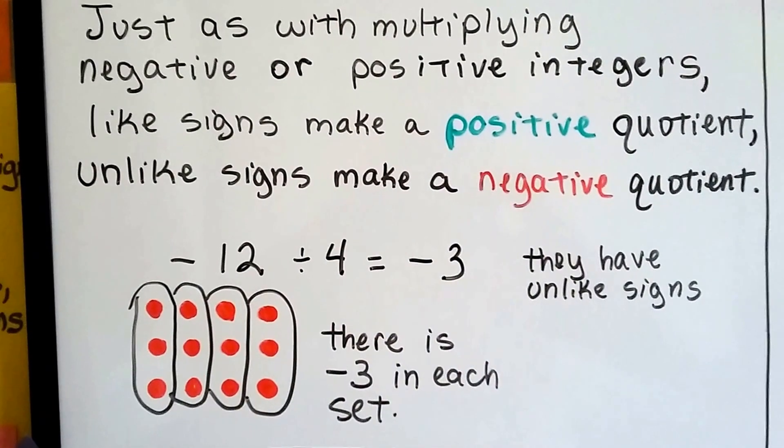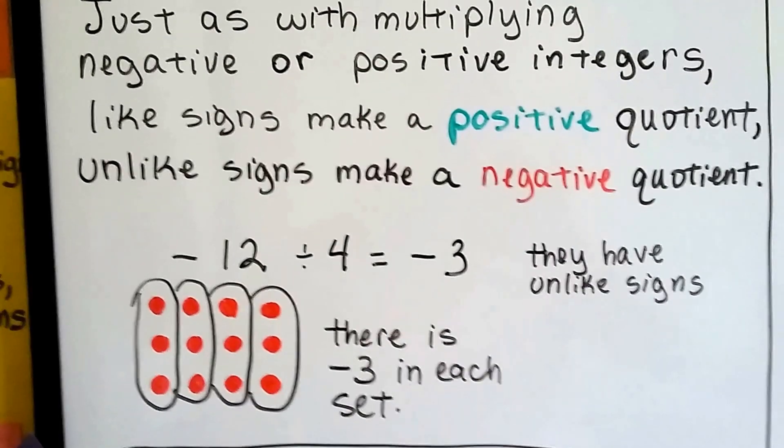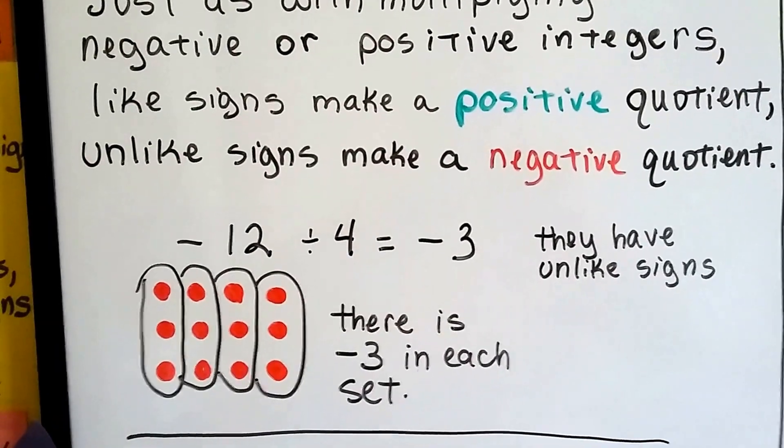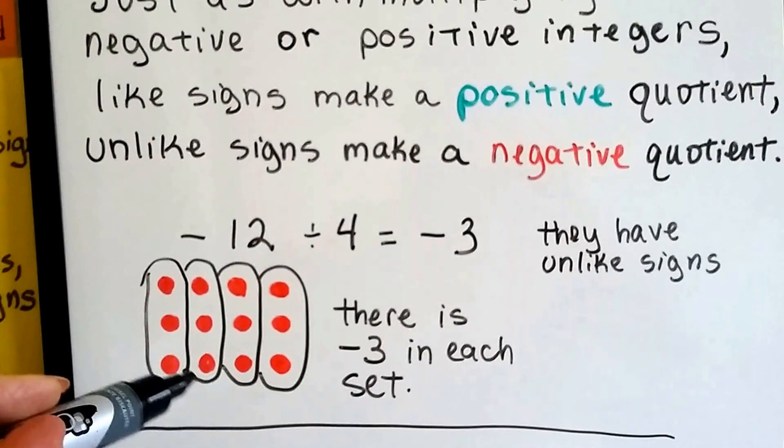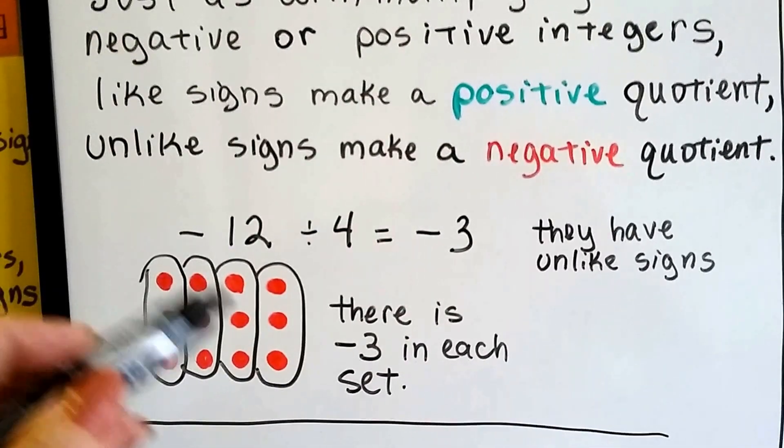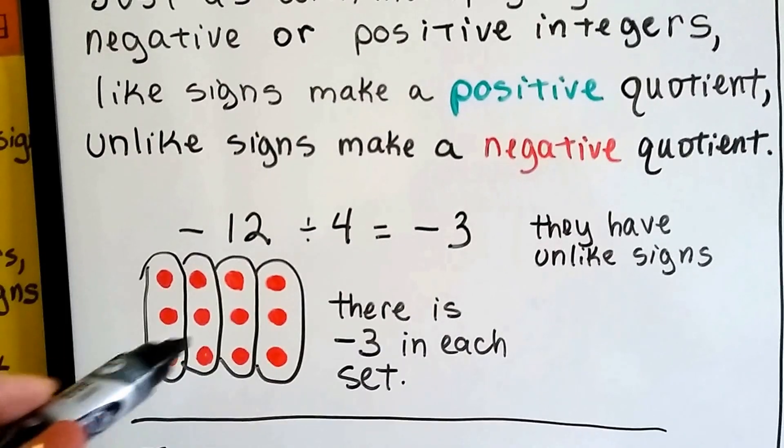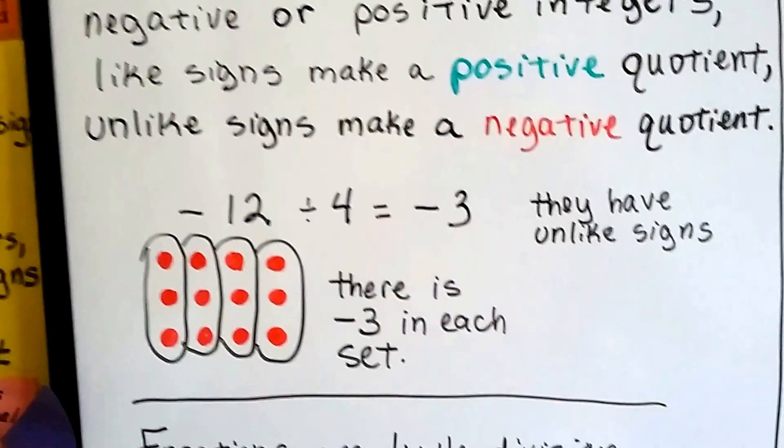So if we have negative 12 divided by a positive 4, they have unlike signs, so it's a negative 3. We had 12 red chips, and we divided it into 4 sets. Well, there's negative 3 in each set, isn't there? It's a negative 3.